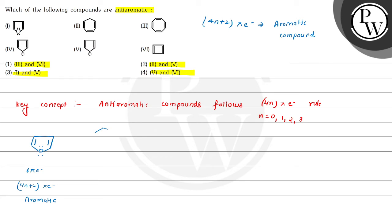The second compound has one sp3 hybridized carbon present, which means the conjugation is not complete in this compound, so this compound is a non-aromatic compound.